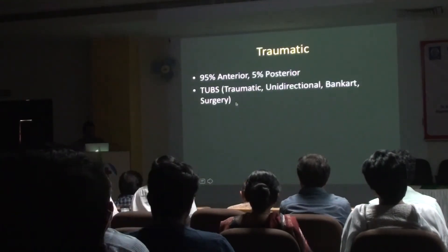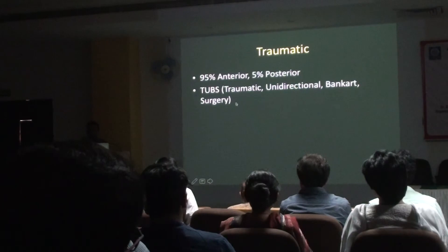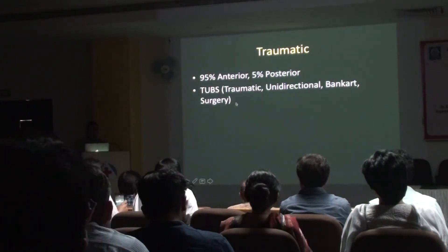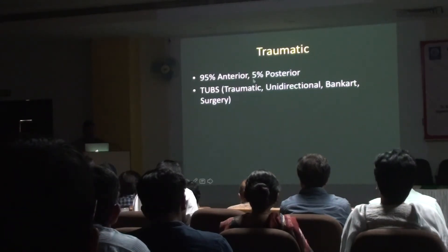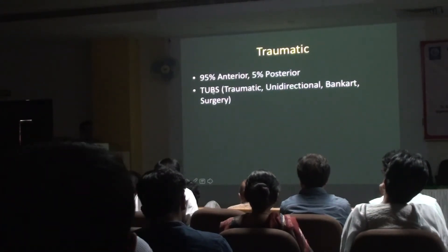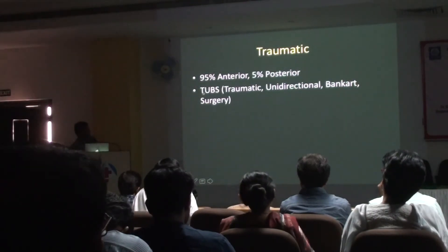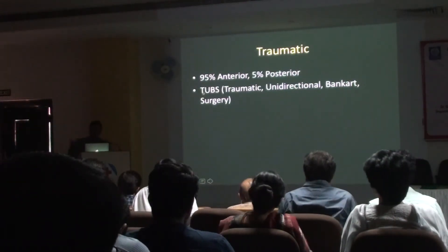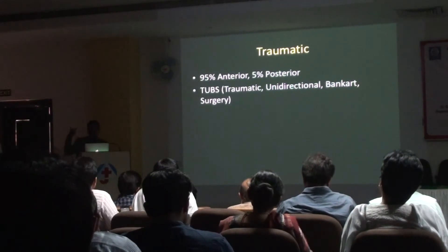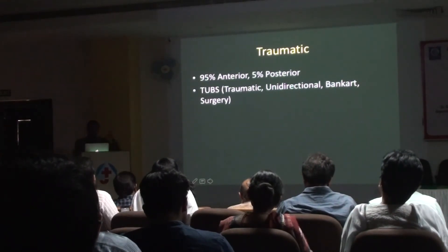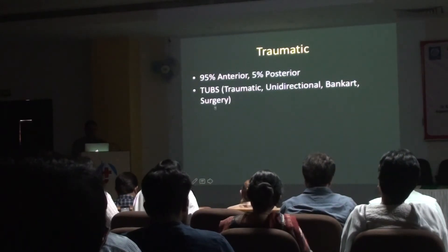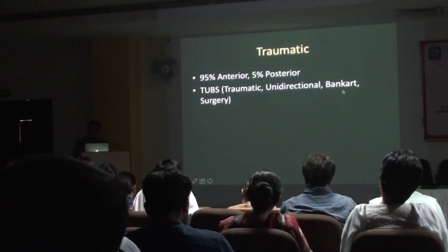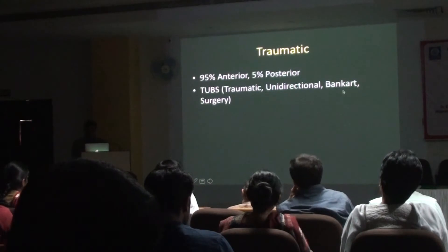There's a pneumonic — TUBS: Traumatic, Unidirectional (either anterior or posterior), requiring Bankart surgery. It always follows after trauma, is unidirectional, these guys usually require surgery, and it is associated with a Bankart lesion.